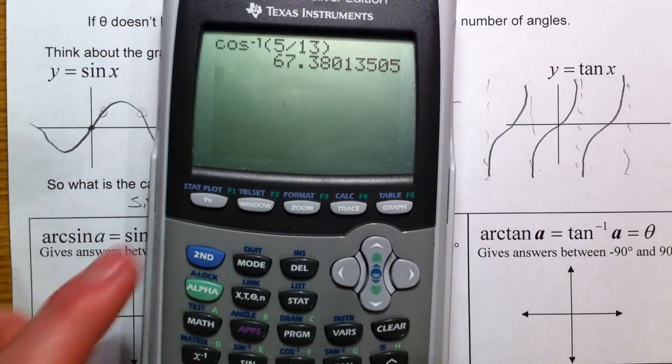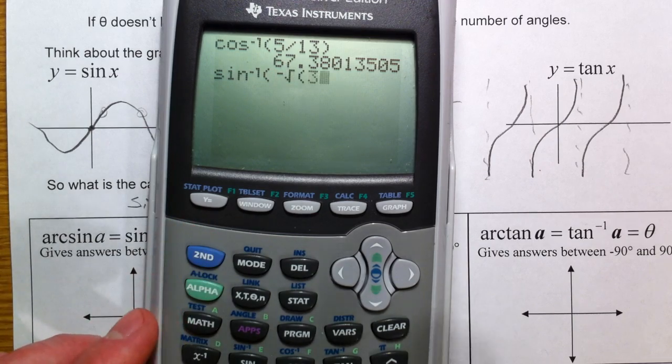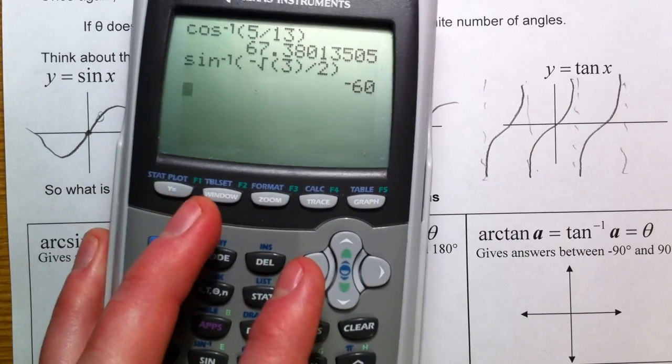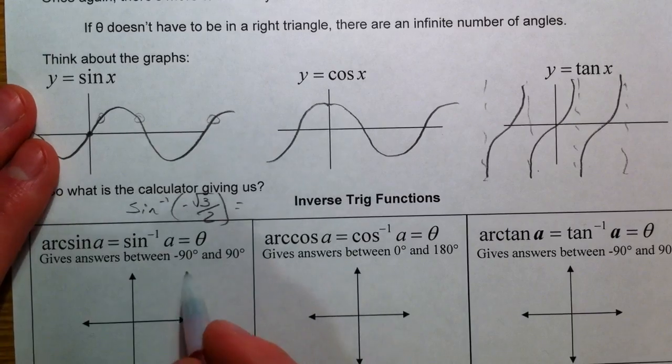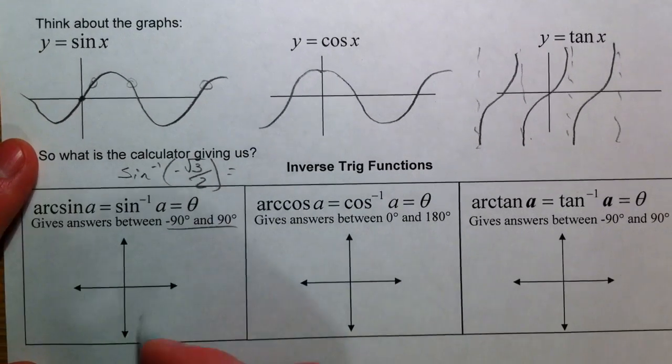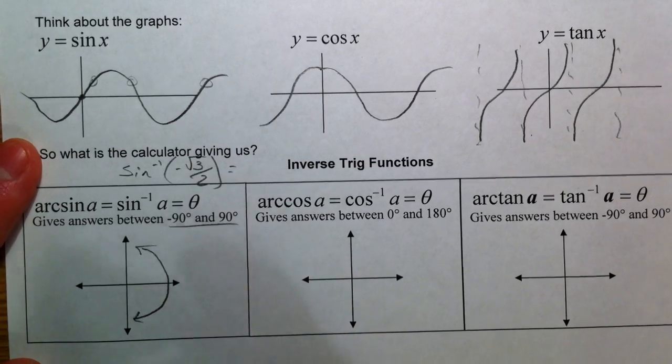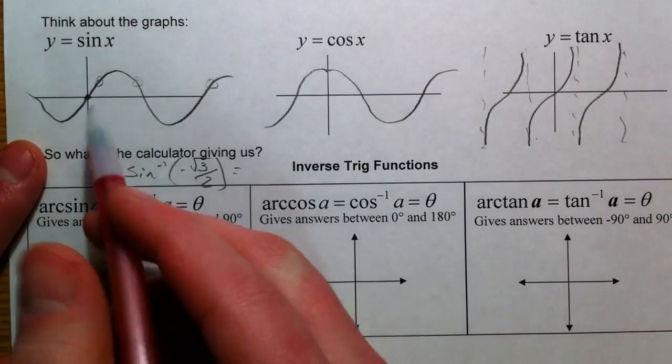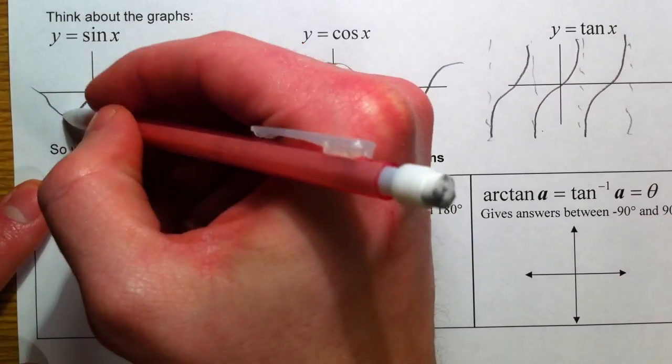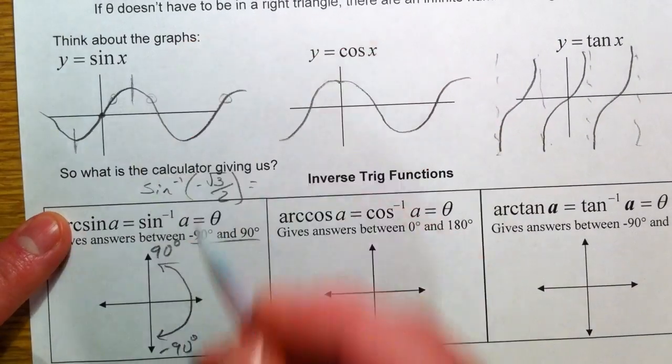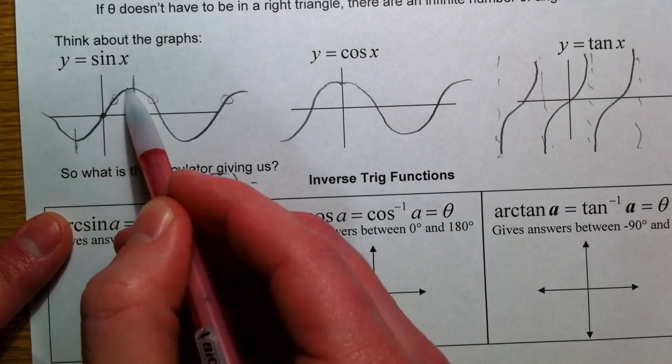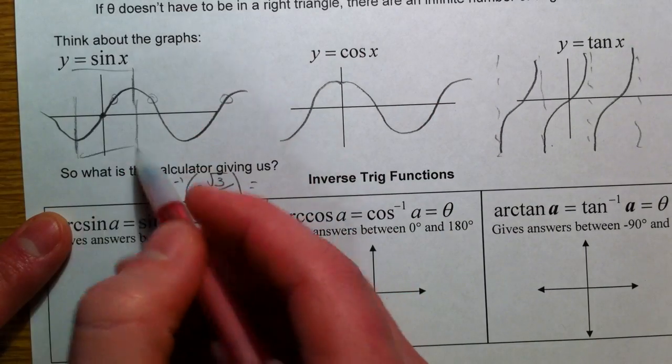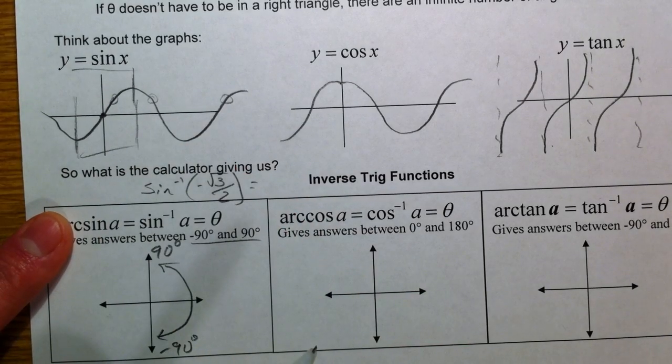The calculator just gives us one answer. If you type in inverse sine of negative root three over two, the calculator gives us negative 60. All of the inverse sine in the calculator is going to be between negative 90 and 90. In the function here, you're going to cut it off right here to right here, and we're going to say we have all of our negative answers right here and all of our positive answers right here. So we're going to restrict our function to there; otherwise, it won't be a function.